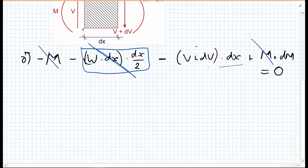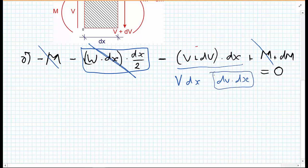We'll expand this term here. We have a V dx and a dV times dx. Again, this is a small number multiplied by a small number, so we're going to neglect this.